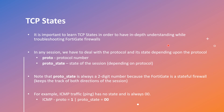For an in-depth understanding of FortiGate firewalls while troubleshooting, it's important that you learn TCP states. In any session, we deal with the protocol and a state depending upon that protocol. The protocol number is denoted by 'proto' and the state of the session is denoted by 'proto_state'. Note that proto_state is always a two-digit number because FortiGate is a stateful firewall, keeping track of sessions in both directions. For ping traffic, there is no state and it's always denoted as 00 — the protocol number for ICMP is 1.